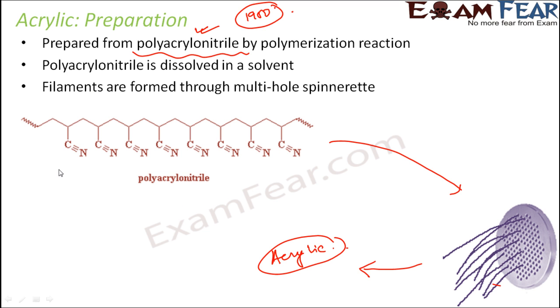Some of the solvents used in this process are sodium thiocyanate or dimethylformamide. The advantages of acrylic are that it is light, soft, and warm. Since it is warm, it can act as a substitute for wool to prepare woolen clothes for winter.